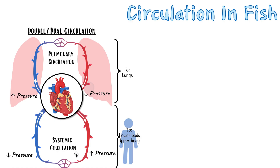Blood pressure was really high close to the heart, but by the time we reach the tiny capillaries the blood flow is very slow. Even slower is the blood draining from the capillaries — blood pressure here is very low as it returns to the heart through veins. The heart then takes this deoxygenated blood and pumps it to the lungs — we call that pulmonary circulation, because pulmonary means lungs.